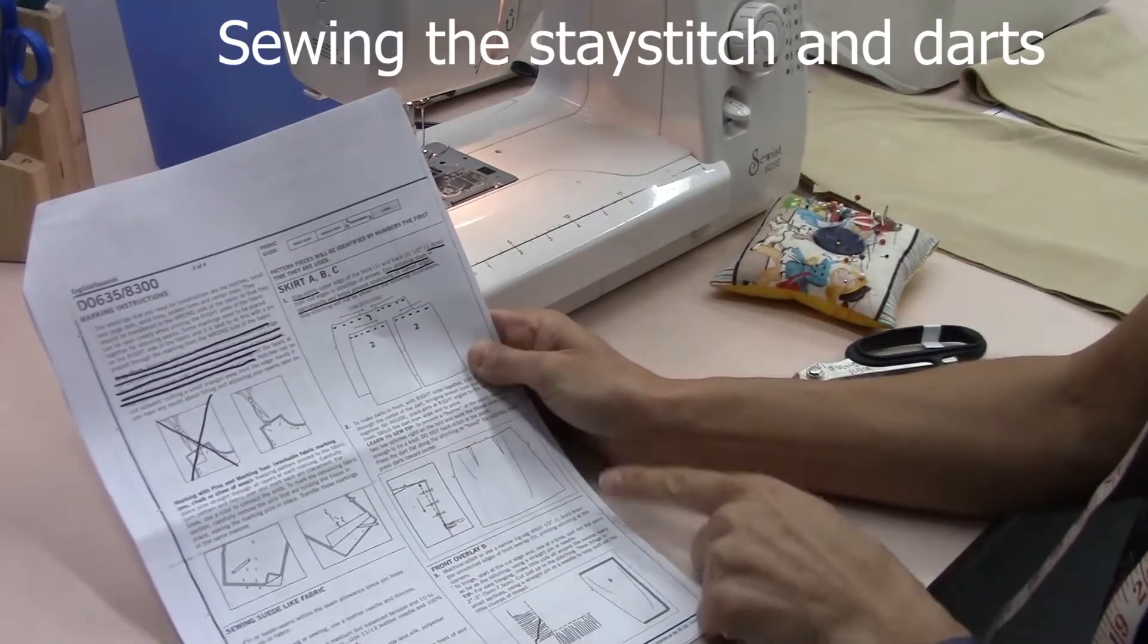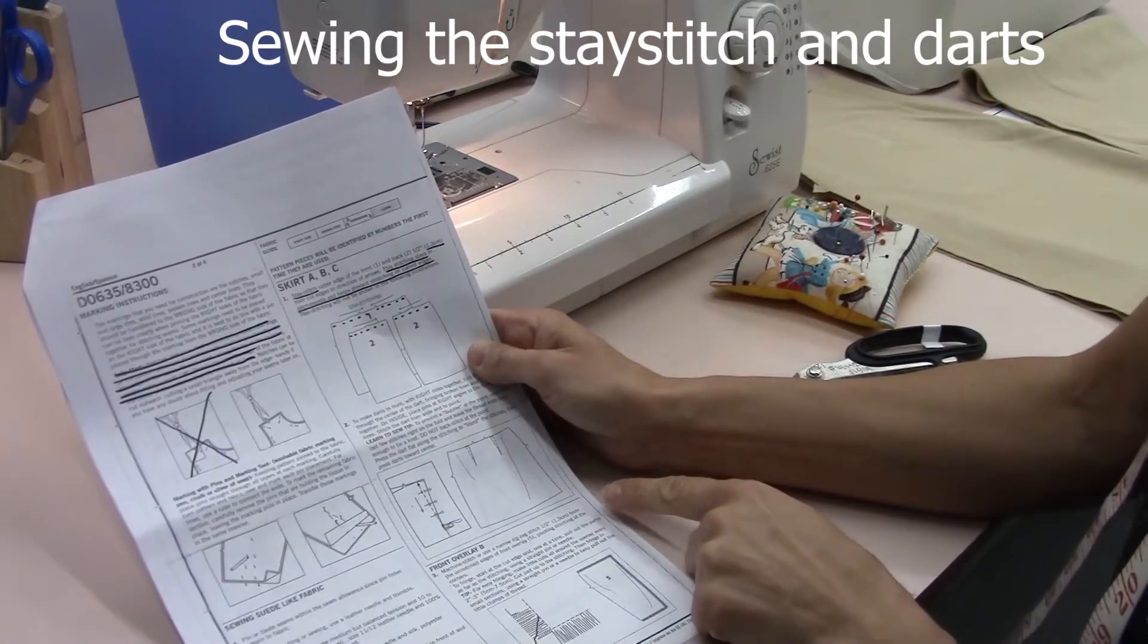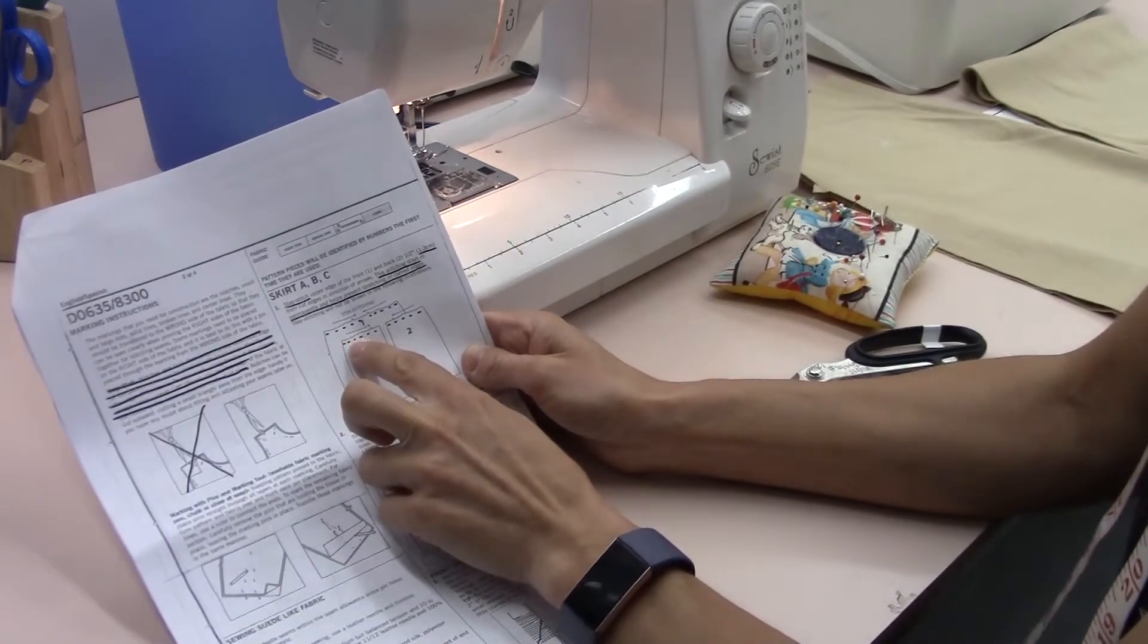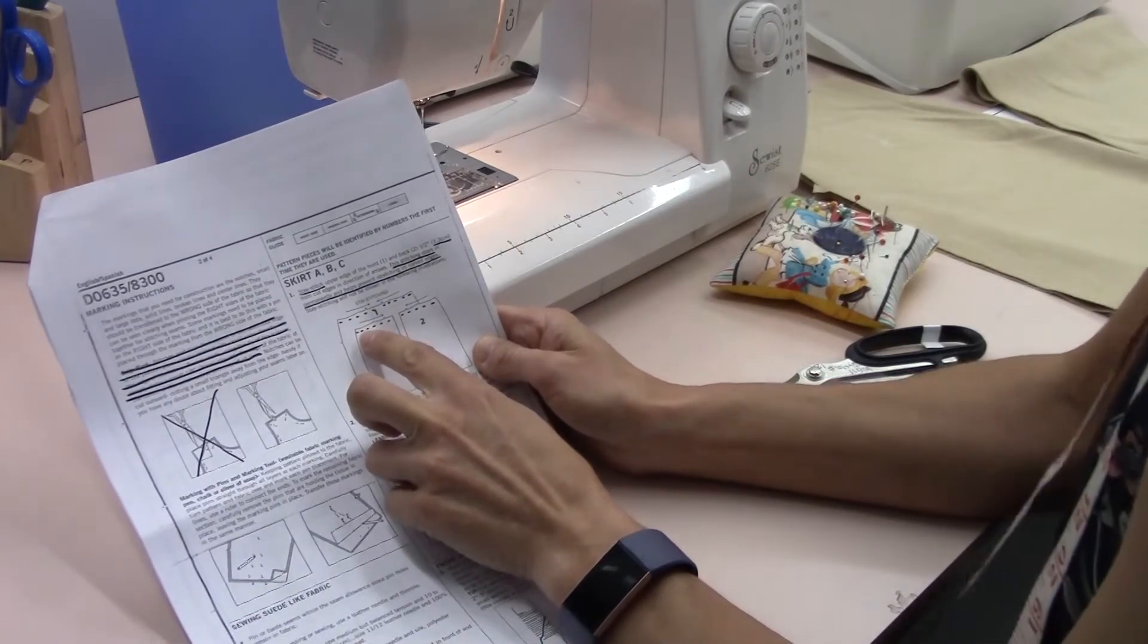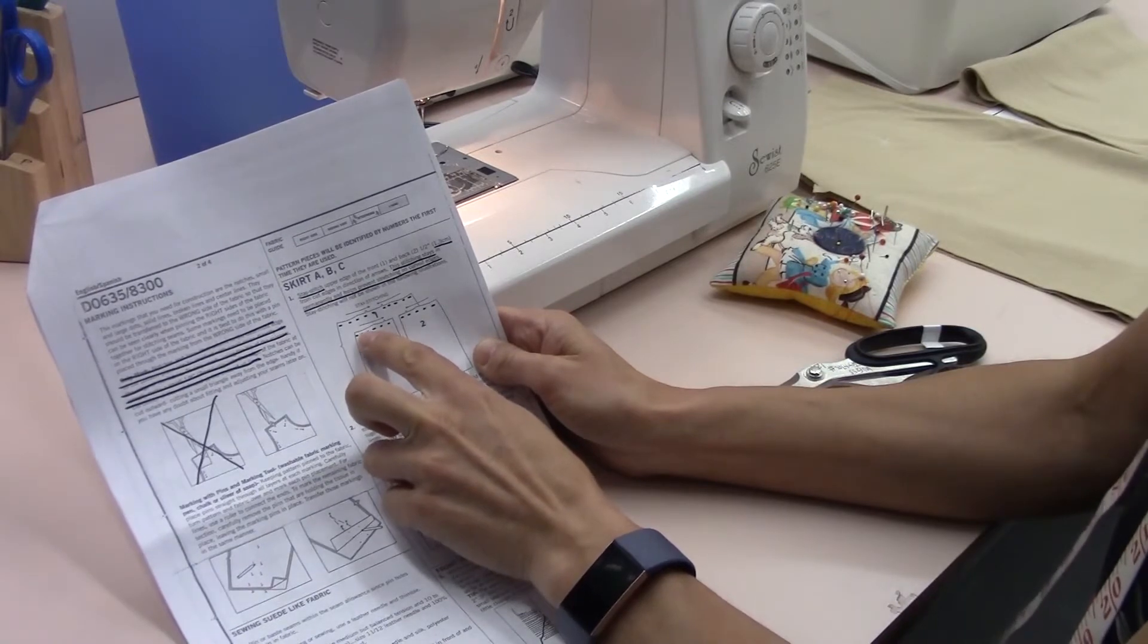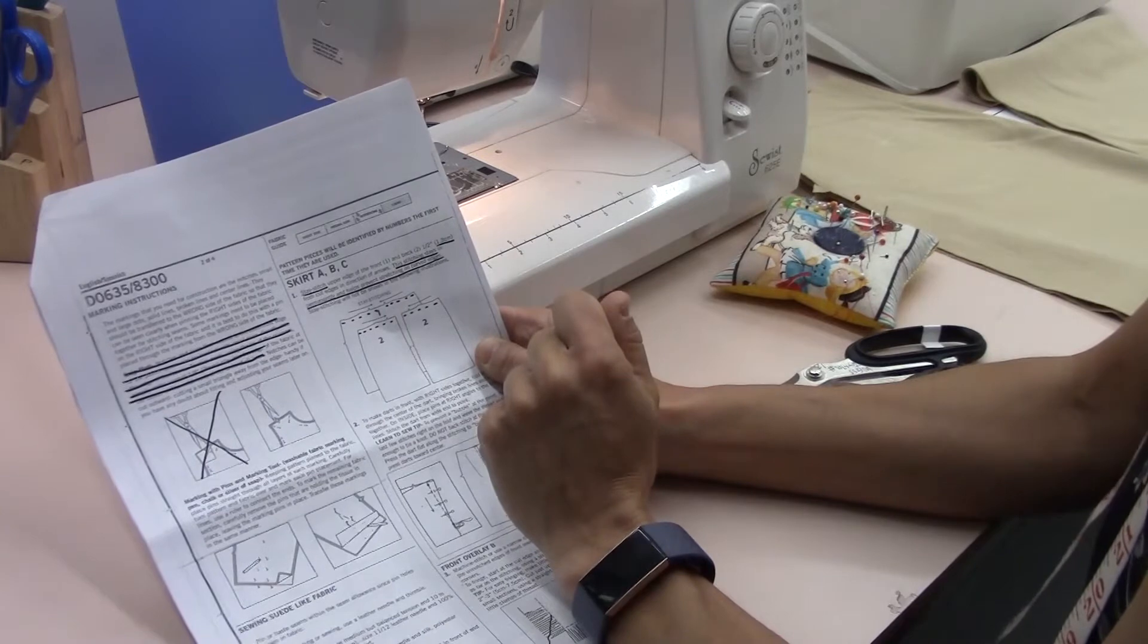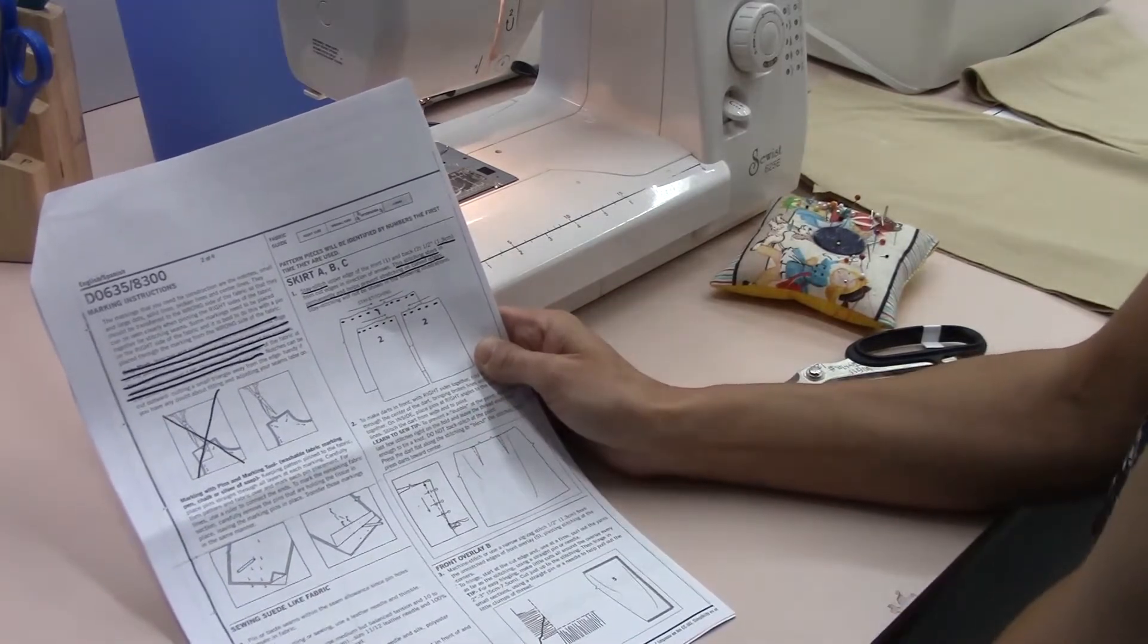We're going to do the stay stitch and the darts in this video. The stay stitch is a stitch at about a 1.3 centimeter seam allowance and what it does is it prevents your top of your skirt from stretching out of shape when you are working with it.